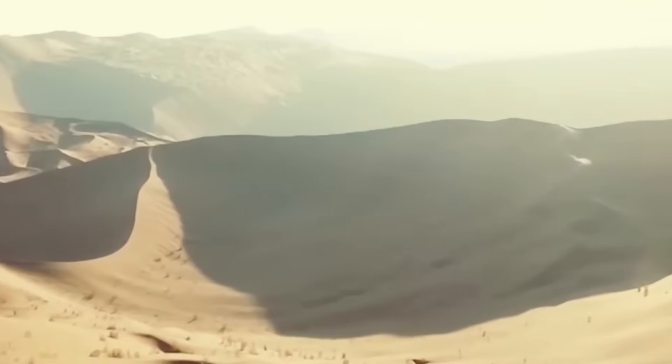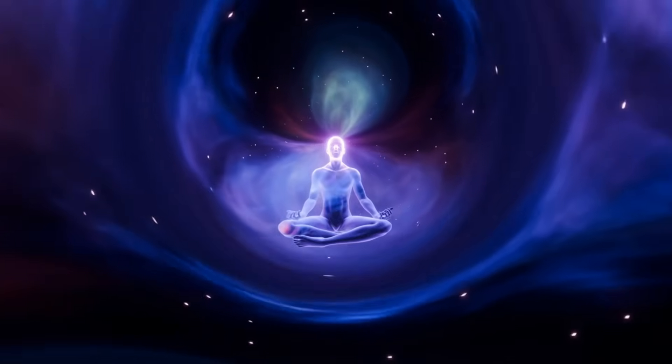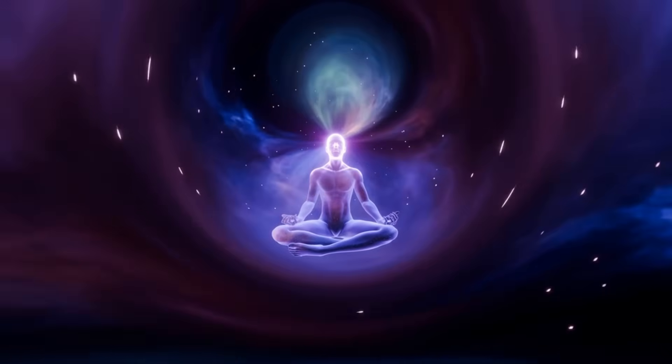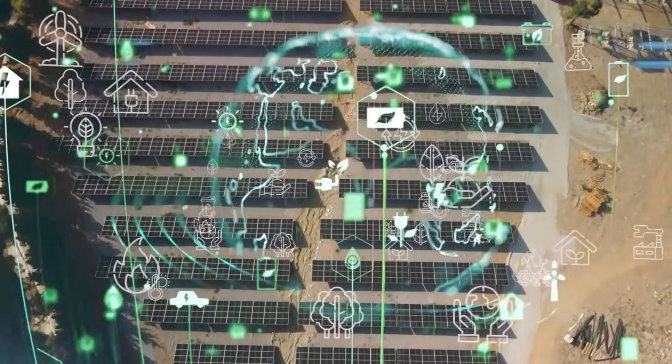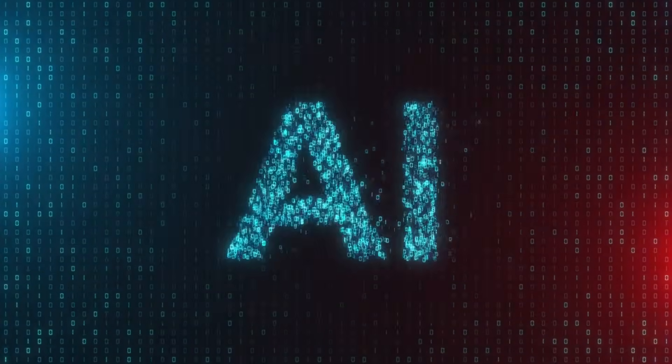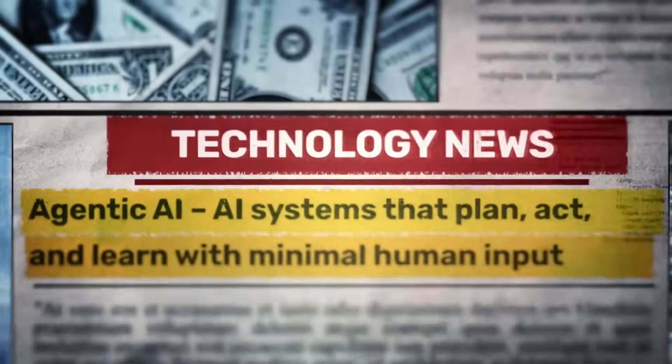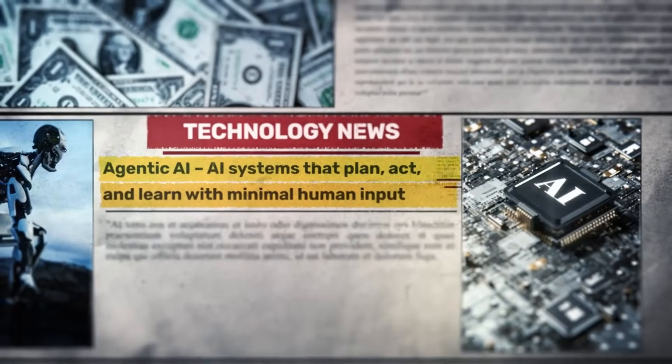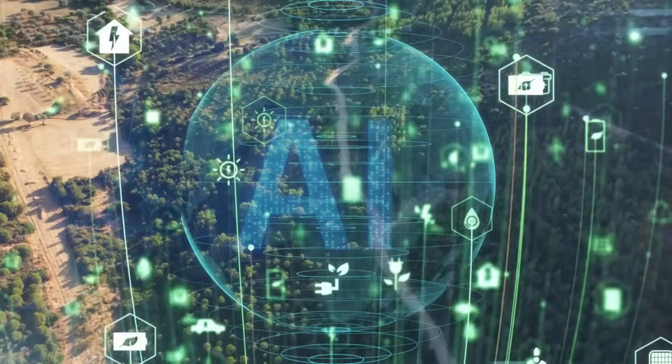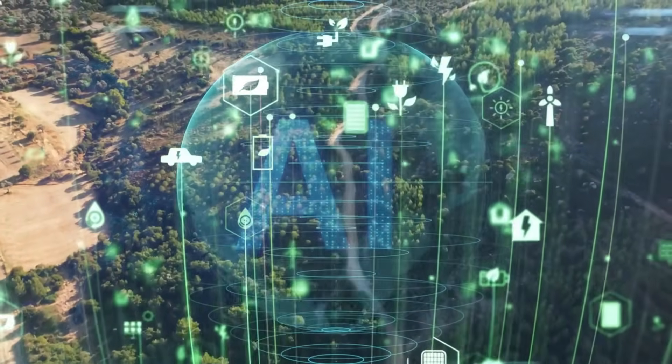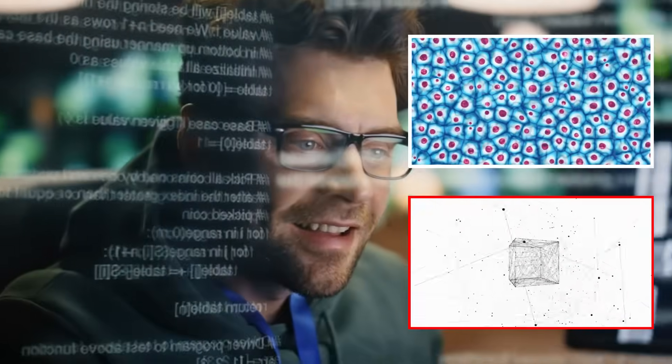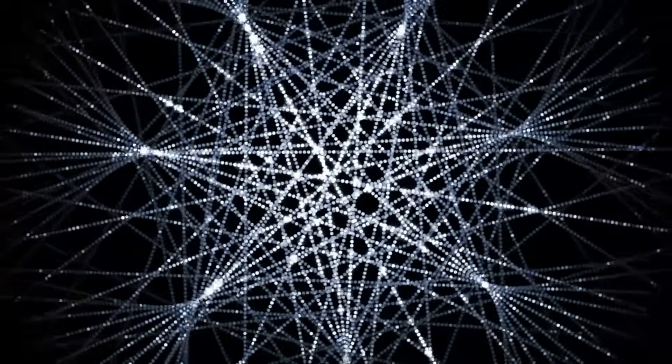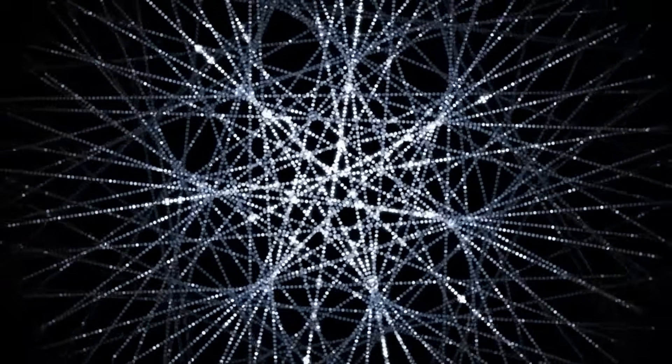A slime mold solving a maze, an AI creating moves in Go that baffle champions, a desert ecosystem optimizing water distribution—these are all manifestations of a deeper, more profound form of intelligence. To understand how we got here, we have to look at who Turing really was: a visionary who saw beyond the limitations of human thinking, who understood that intelligence is not a mystical human trait but a computational process that can emerge in the most unexpected places.